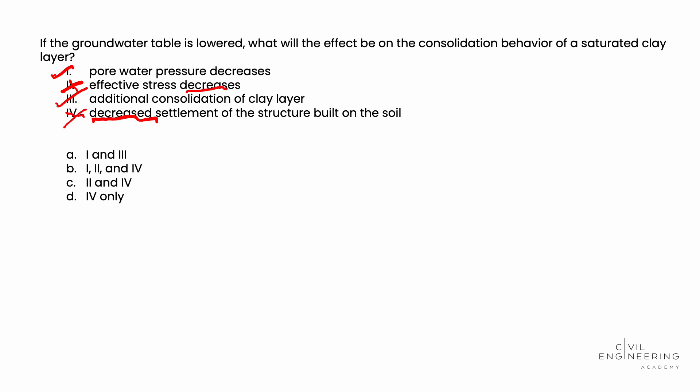So if we look at the answer choices, we see that answer choice A is the correct answer. Roman numeral one and Roman numeral three show the effects that will be expected if the groundwater table is lowered, and we've successfully answered this problem.